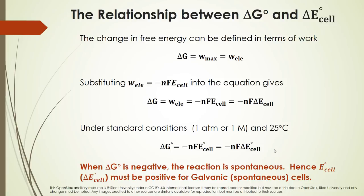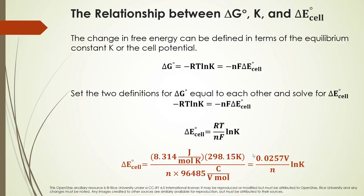When delta G naught is negative — as we saw in thermodynamics — the reaction is spontaneous. So when the cell potential is positive, the free energy is negative. Positive cell potentials mean the cell reaction is spontaneous. This is consistent with what we've already seen.